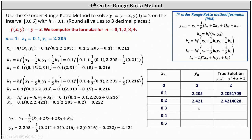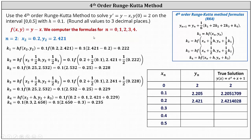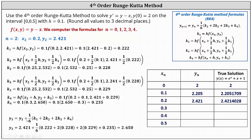Next, we want to determine y sub 3. To determine y sub 3, notice n is equal to 2, which means we'll use x sub 2 and y sub 2. We determine k sub 1 through k sub 4: k sub 1 equals 0.222, k sub 2 equals 0.228, k sub 3 equals 0.229, and k sub 4 equals 0.235. y sub 3 equals y sub 2 plus one-sixth times the sum of k sub 1, 2k sub 2, 2k sub 3, and k sub 4, resulting in y sub 3 equals 2.650.